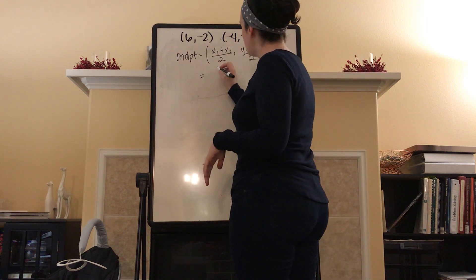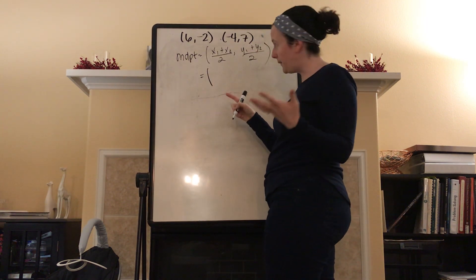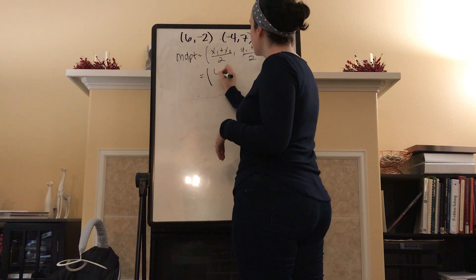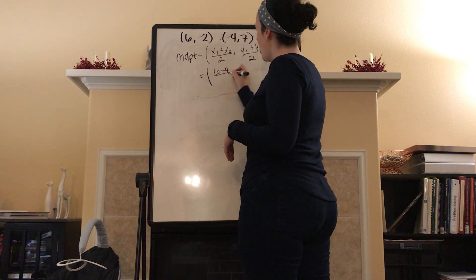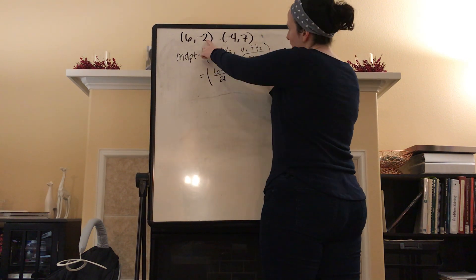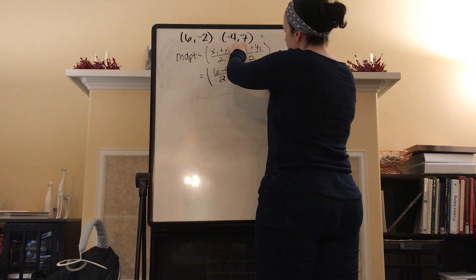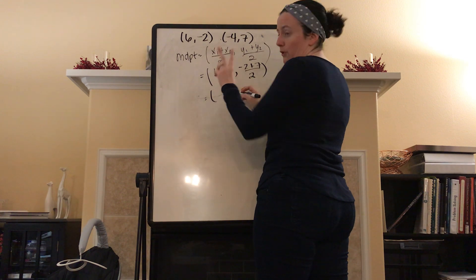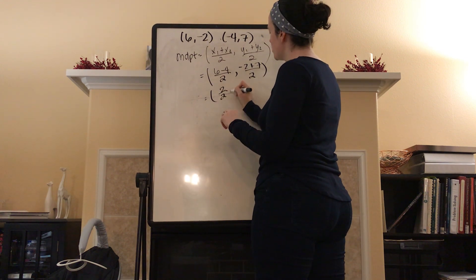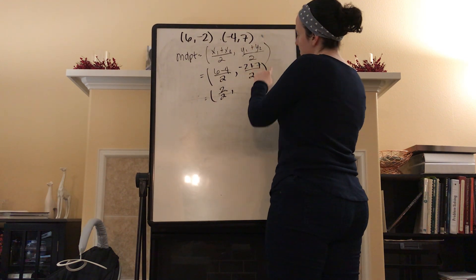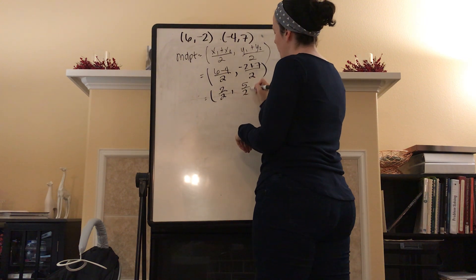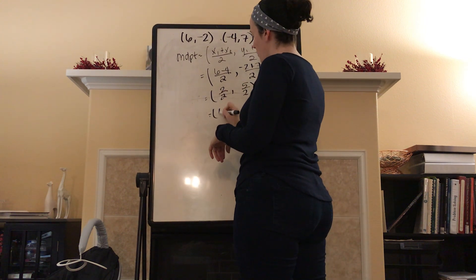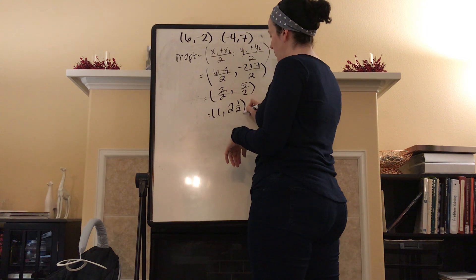So that's going to be equal to, notice I'm keeping the parentheses because point. So that's going to be (6 - 4) all over 2. And then my Y's, that's going to be (-2 + 7) all over 2. So this is going to be equal to 6 minus 4 is 2. So 2 over 2. And then -2 plus 7 is going to be 5 over 2. So this is the point (1, 2.5).